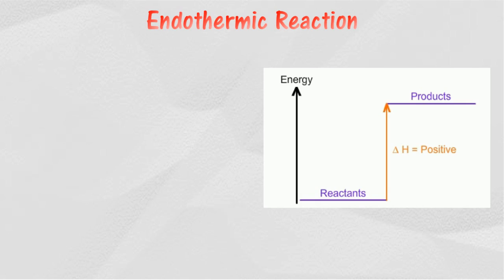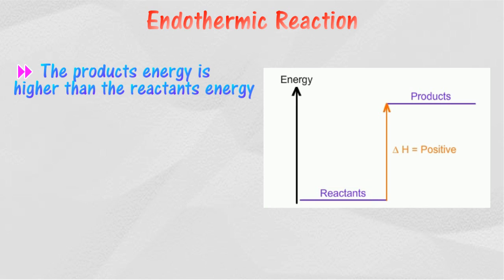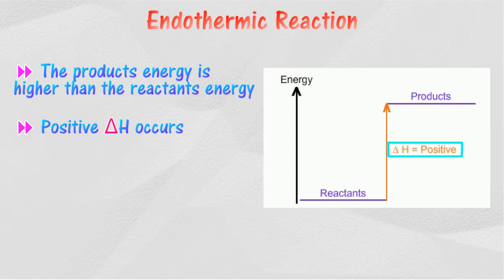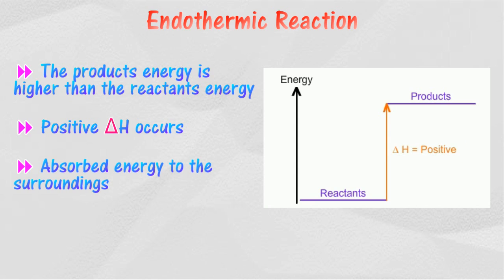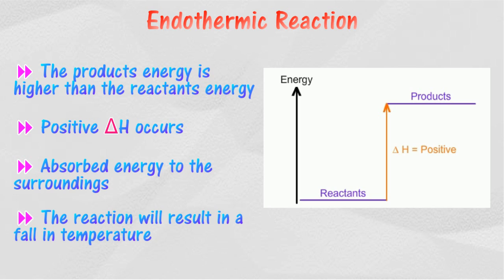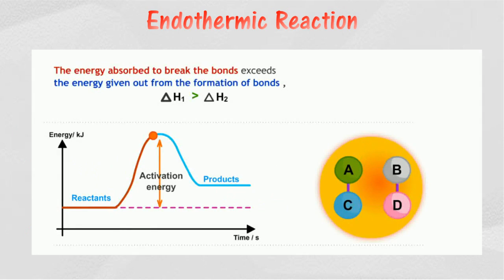In the energy level diagram of an endothermic reaction, if the energy content in the reactants is less than the energy content of the products, then Delta H is positive. Positive Delta H occurs in endothermic reactions. The reactants have absorbed energy from the surroundings, and the products have a higher energy content compared to the reactants. The reaction results in a fall in temperature. The energy absorbed to break the bonds exceeds the energy given out from the formation of bonds, causing the products to have higher energy content than that of the reactants.